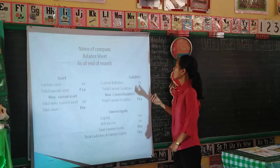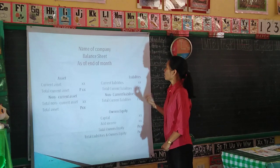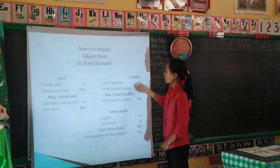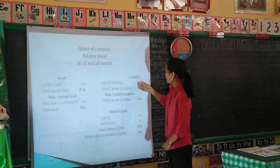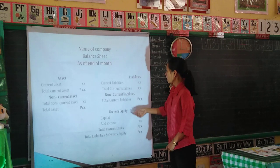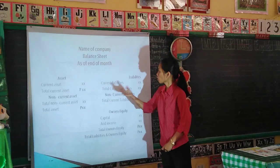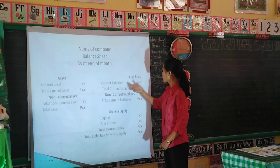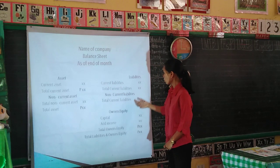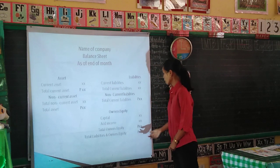Next is the balance sheet. The format includes assets, liabilities, and owner's equity. The total amount of assets and liabilities must be equal to the owner's equity.